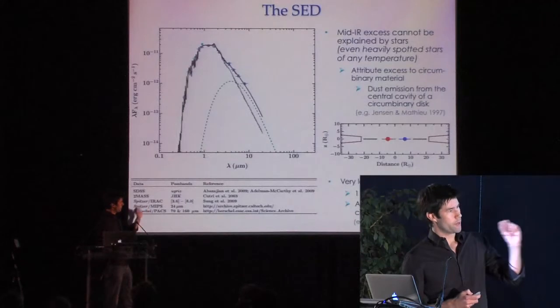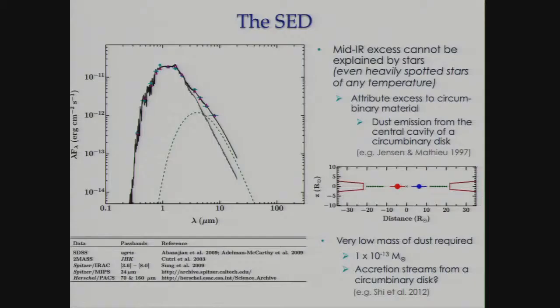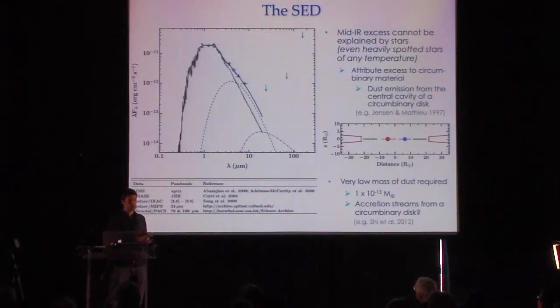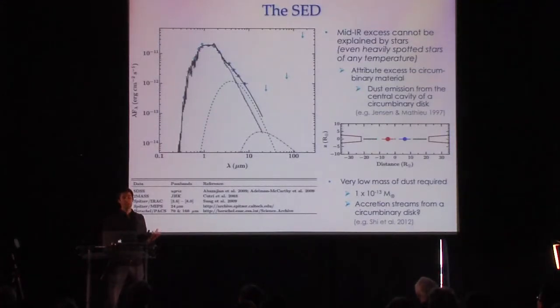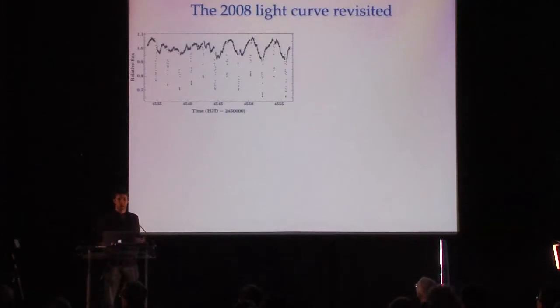Unfortunately, we can't directly detect the circumbinary disk itself because we only have relatively weak upper limits further redward than the IRAC data, and the expected emission from a circumbinary disk lies significantly below our detection limits. However, such a disk would certainly be required to replenish the dust in the cavity, since dust has a lifetime in the cavity essentially akin to the freefall time. Now we know there's extra material in the system, so we can go back to the light curve to see if this helps our understanding.